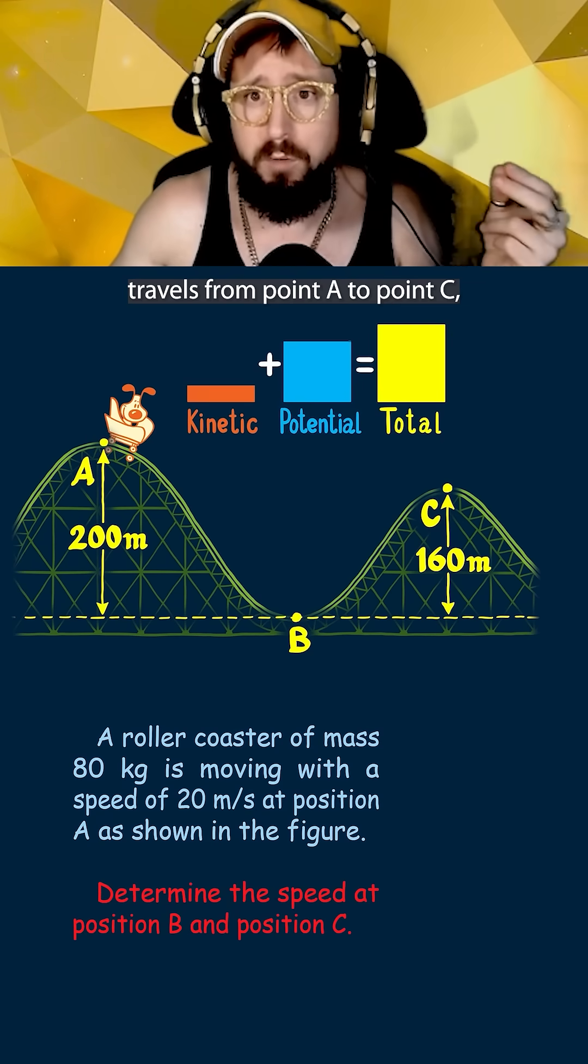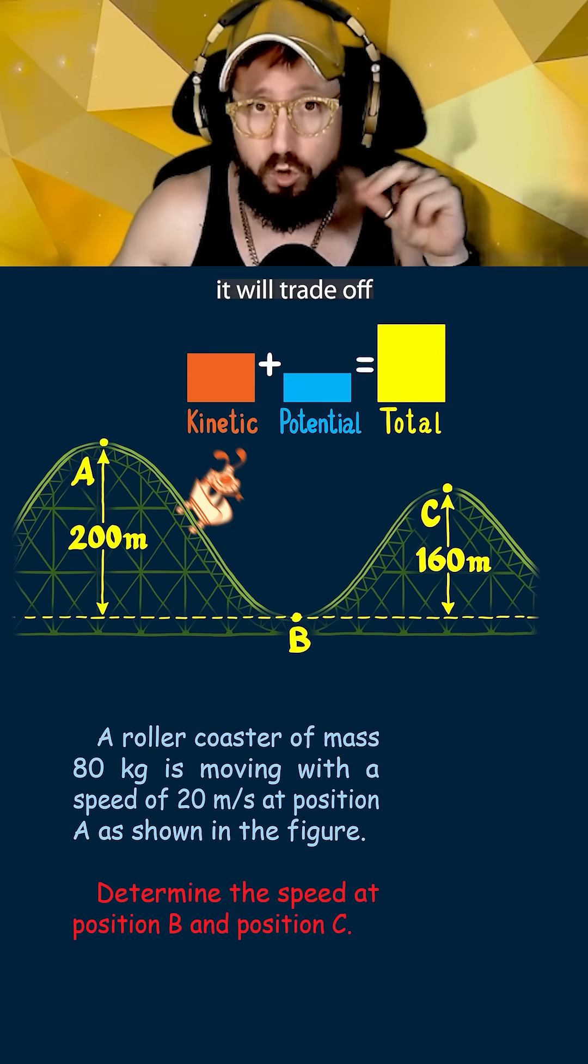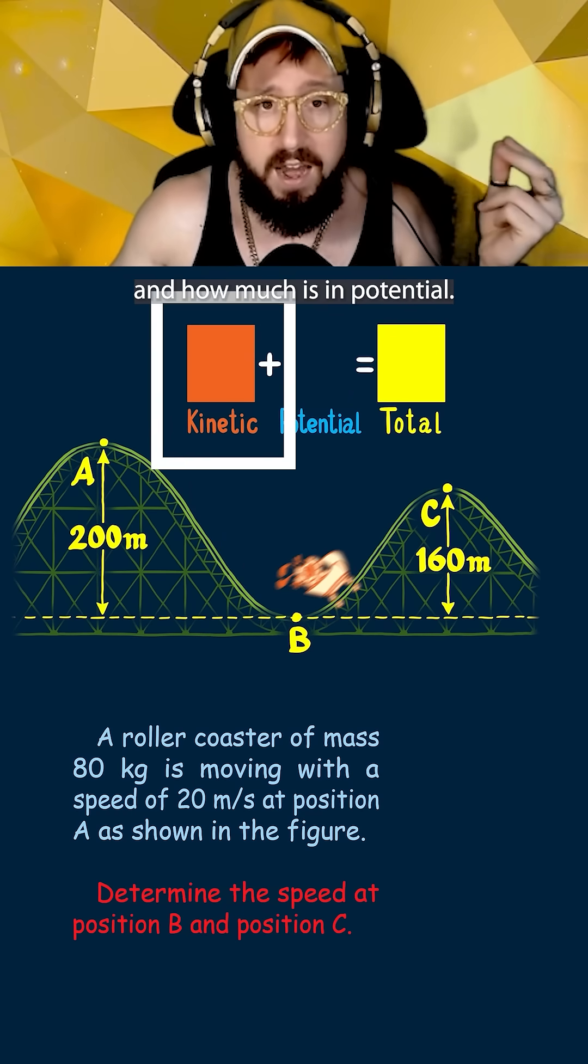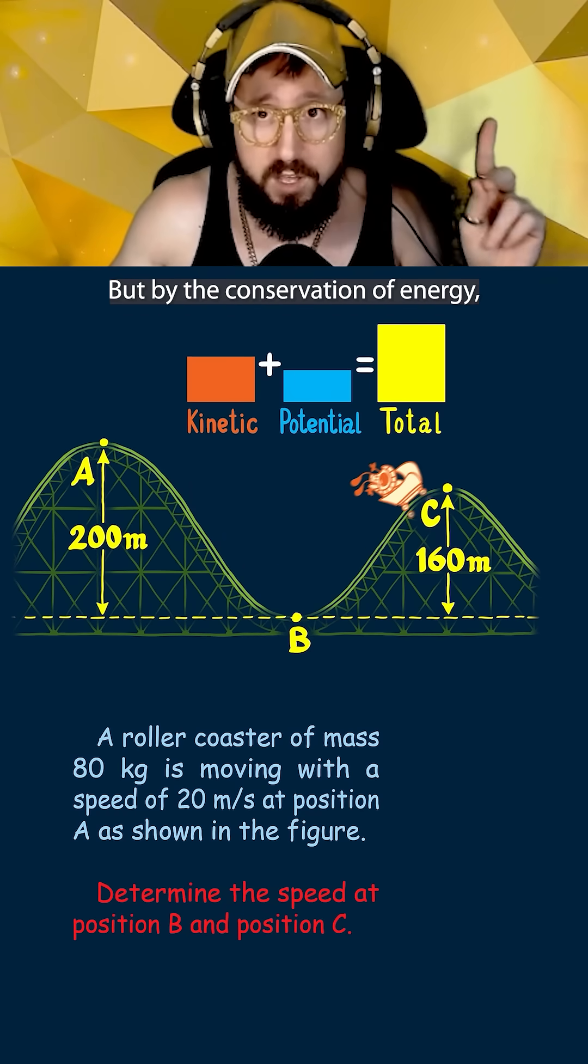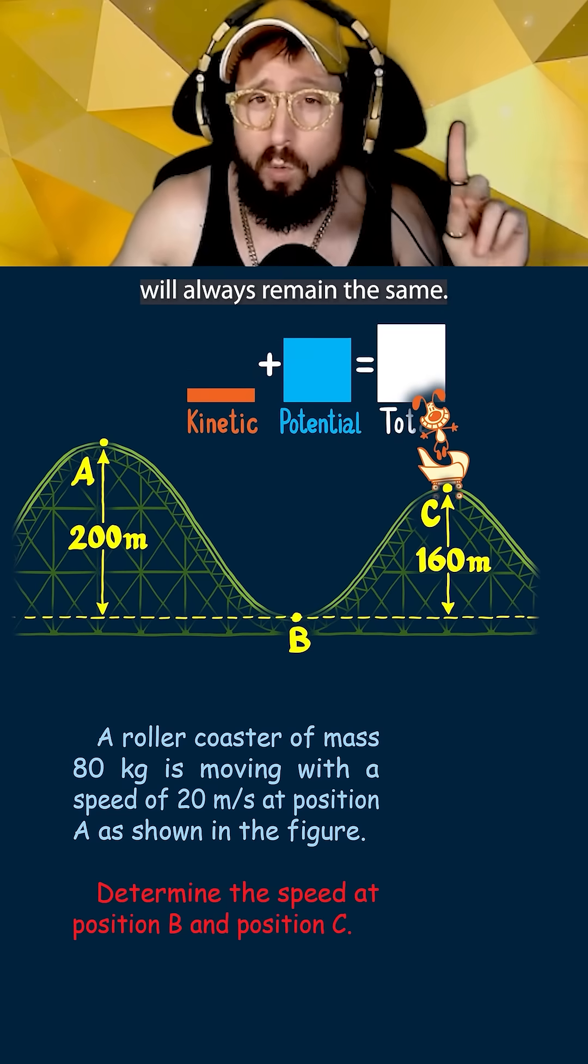It turns out that as our roller coaster travels from point A to point C it will trade off how much energy is in kinetic and how much is in potential, but by the conservation of energy the total energy will always remain the same.